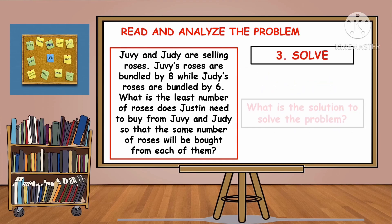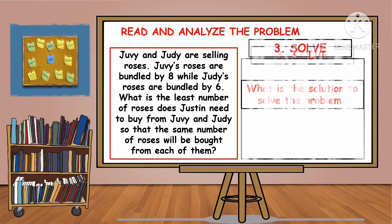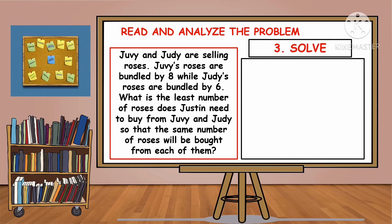The third step: what is the solution to solve the problem? To solve the problem, we're going to use continuous division. Last time, you were already taught how to do continuous division. The first step is to write the given numbers, then draw an inverted division. Next, think of a number that is divisible into 8 and 6. Since they are even numbers, we can divide them by 2. 8 divided by 2 is 4, and 6 divided by 2 is 3. Then continue the process.